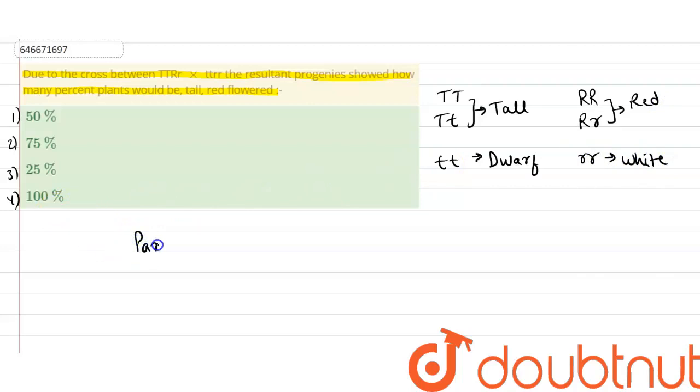So we have the parents here. Now parents are basically TT Rr and tt rr. The gametes produced by them will be T R, T r, and here only one type of gamete, t r. So if we create a Punnett square for this.